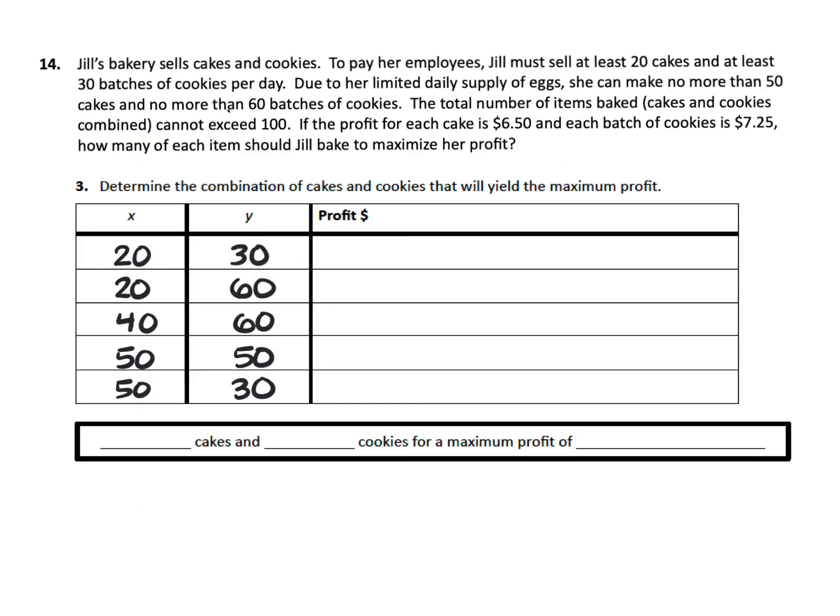Now that we have the vertices of the feasible region, we can transfer those to the table. And we need to see which combination of cakes and cookies makes the most money. If you go back to how the variables were defined, X is the number of cakes and Y is the number of cookies. We need to come up with a profit equation though, so we can figure out which combination makes the most money. So for that, we have to go back to the question. And if we read carefully, it tells us how much each profits. So the profit for each cake is $6.50 and each batch of cookies is $7.25. Since cake is the X and it's $6.50 for the cake, we need $6.50 with the X. So I'm going to go plus 6.50X and then I need plus 7.25Y because the cookies are the Y's.